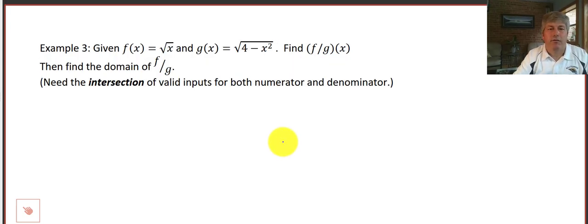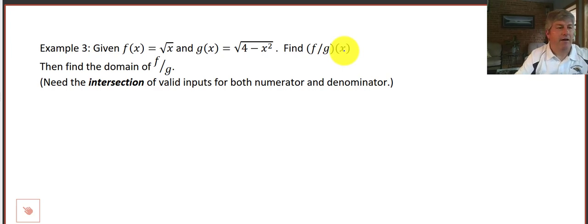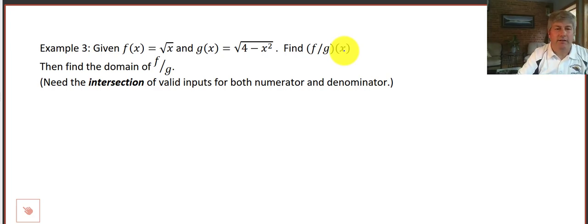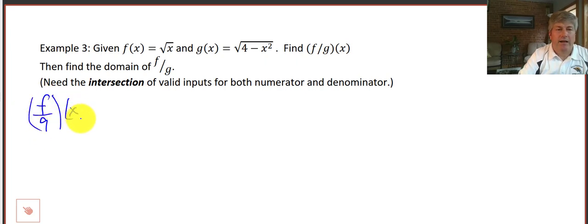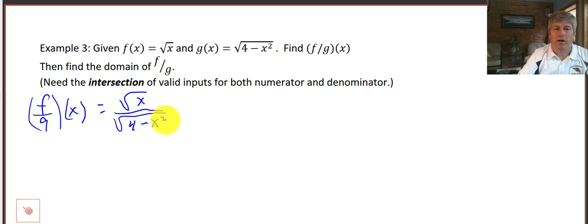This next example is a little bit different. We're given f of x and g of x. Find f divided by g of x, then find the domain of f divided by g. The division is actually a little easier than we might think. F divided by g of x is simply the square root of x divided by the square root of 4 minus x squared. We're not going to rationalize this — just set it up and leave it.